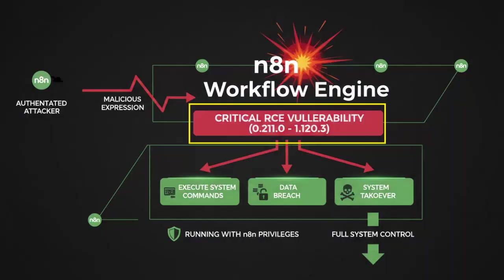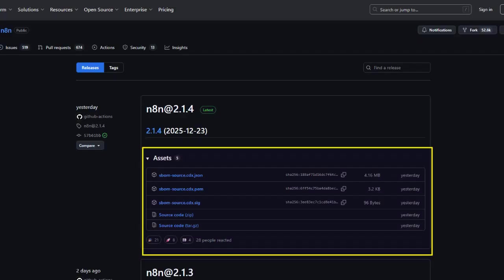These are the vulnerable versions, which allowed a critical RCE vulnerability in the workflow expression engine, meaning an unauthenticated attacker could execute system-level commands, potentially leading to data breaches and system disruption. The good news is patches have been released for N8N, so if you're running N8N and have not updated, you should update to the patched versions.